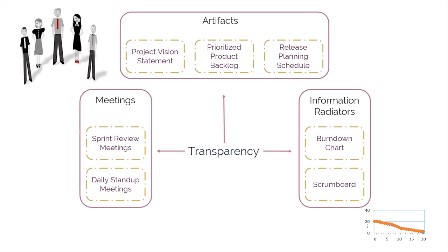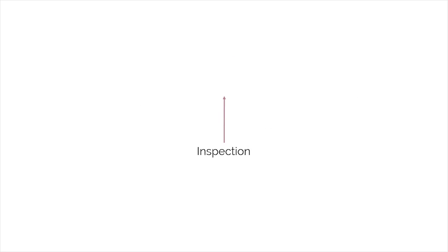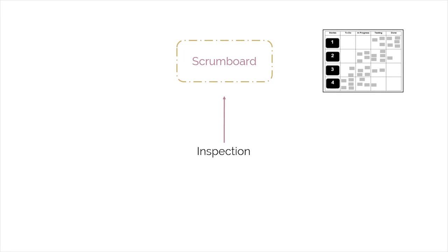The next characteristic of Empirical Process Control is inspection. Scrum provides a point of inspection with the use of a common Scrum board and other information radiators, which show the progress of the Scrum team on completing the tasks in the current sprint.